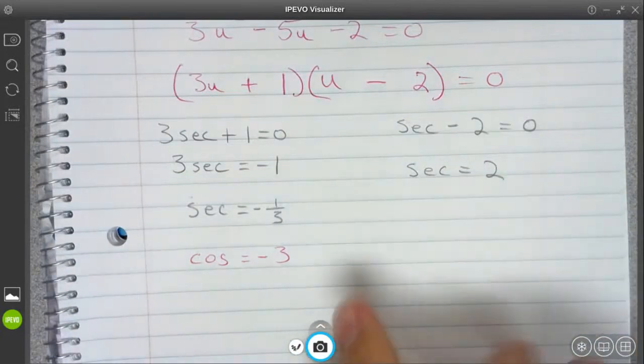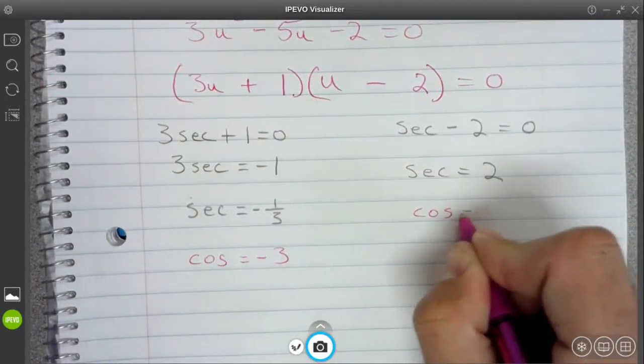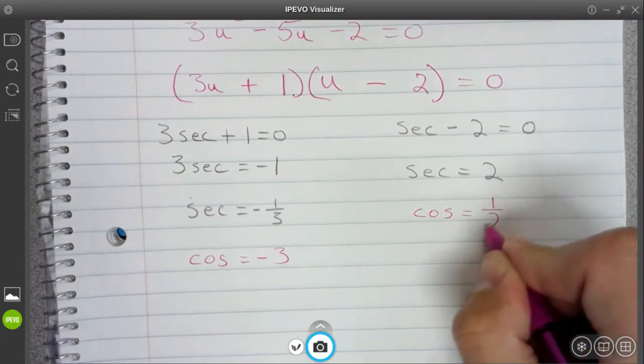I'll flip them over, reciprocate that. Here I'm going to say cosine is equal to positive 1 half.